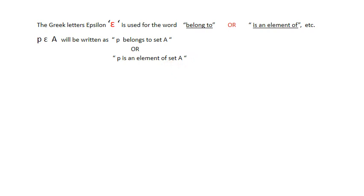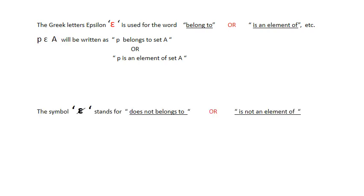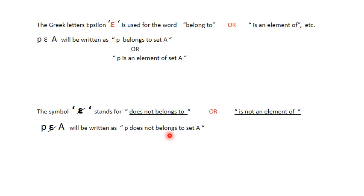In set A, P is an element. Now, the symbol epsilon with a slash through it (∉) means 'does not belong to' or 'is not an element of'. So if we write P ∉ A, it means P does not belong to set A, or P is not an element of set A.